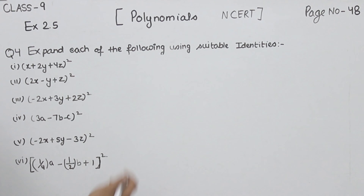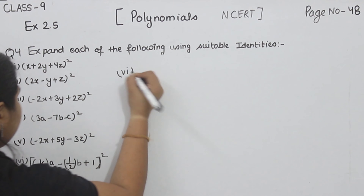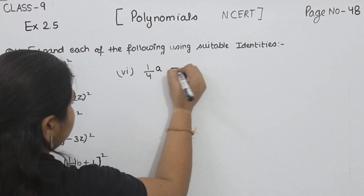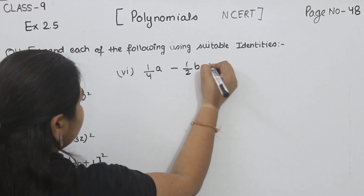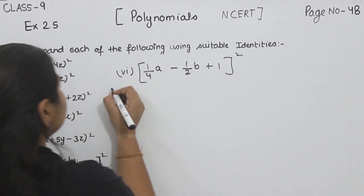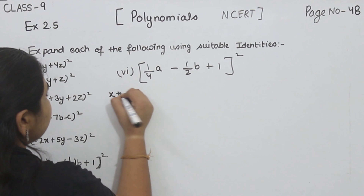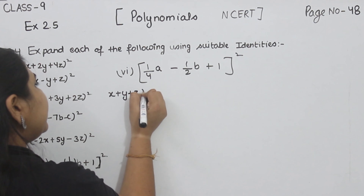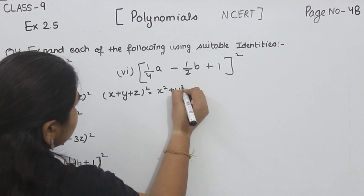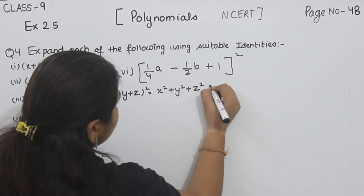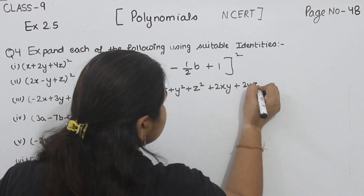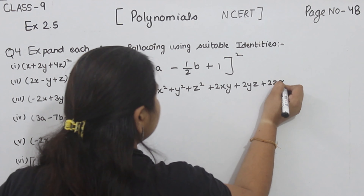Now part 6: one-quarter a minus one-half b plus 1, whole square. We are going to use the identity X plus Y plus Z whole square is equal to X square plus Y square plus Z square plus 2XY plus 2YZ plus 2ZX.